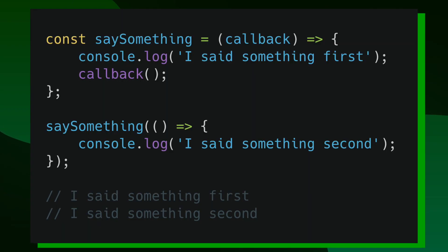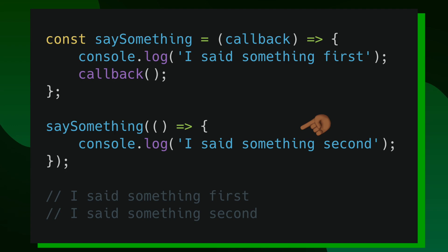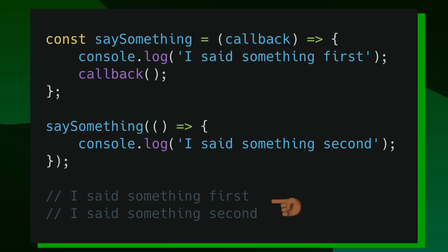So right after defining the function, I call saySomething where I pass in an anonymous arrow function. Inside of my anonymous arrow function, I'm printing out 'I said something second.' So if I call saySomething with this information passed into it, what I should see inside of my console is 'I said something first', and then 'I said something second.'